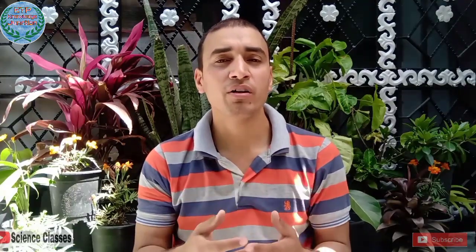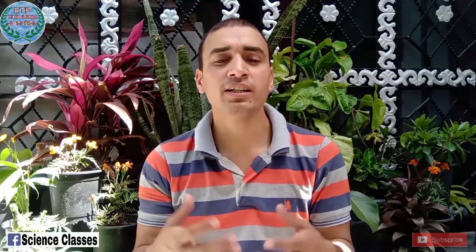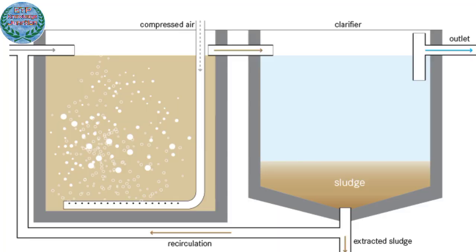Similarly, a low FM ratio means there are many microorganisms but a limited amount of food. Only when the food supply is limited do bacteria begin to develop a thicker slime layer, lose their motility, and begin to clump together to form a dense floc that will settle well in the clarifier.